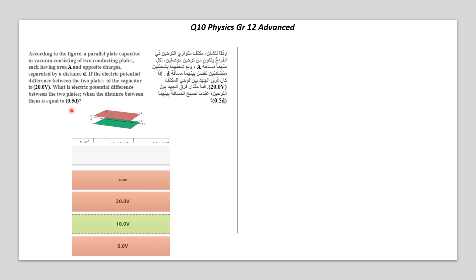In this question, we are talking about delta V, electric potential difference, and the distance. What equation combines these two parameters? It's this one: delta V equals electric field multiplied by distance. You can refer back to chapter 4, section 3 — there is a very similar question there, in concept check 4.2.